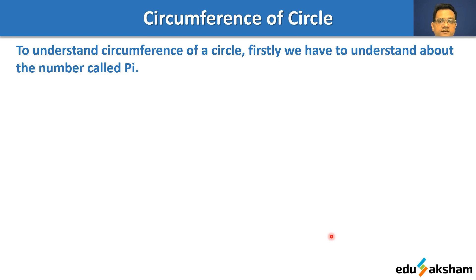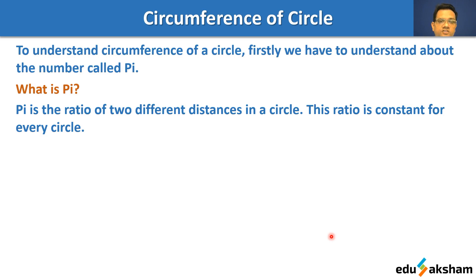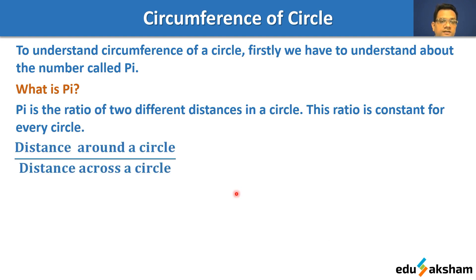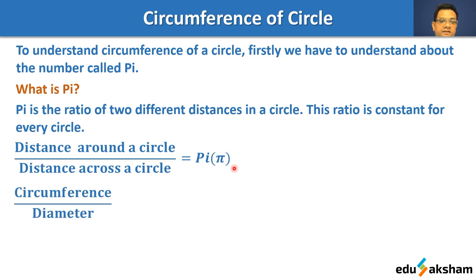To understand the circumference of a circle, we first have to understand the number called pi. Pi is the ratio of two different distances in a circle, and this ratio is constant for every circle. The ratio is: distance around a circle divided by distance across a circle, and this equals pi. Distance around the circle is the circumference, and distance across the circle is the diameter, so circumference divided by diameter equals pi. Pi is a Greek symbol.